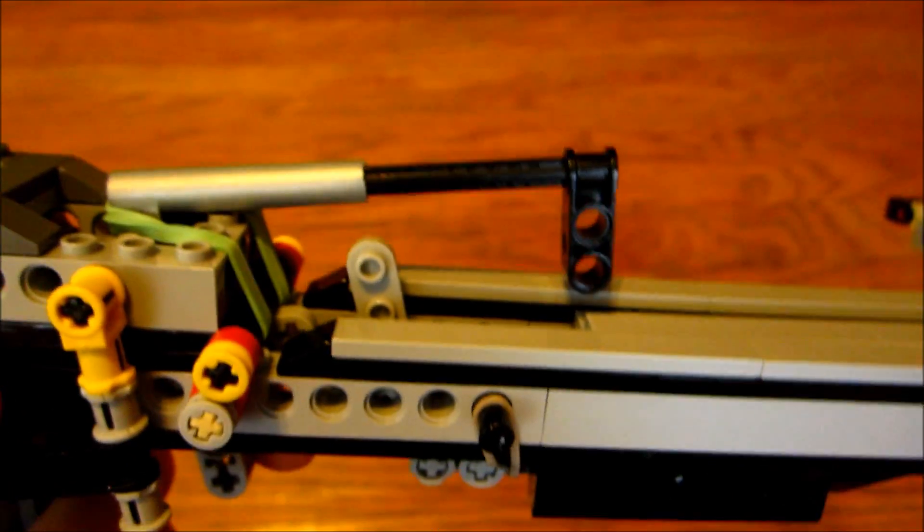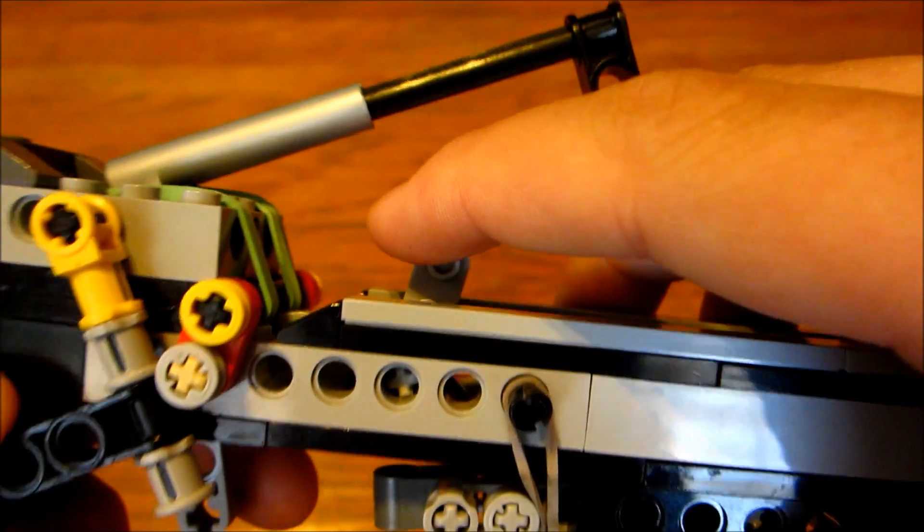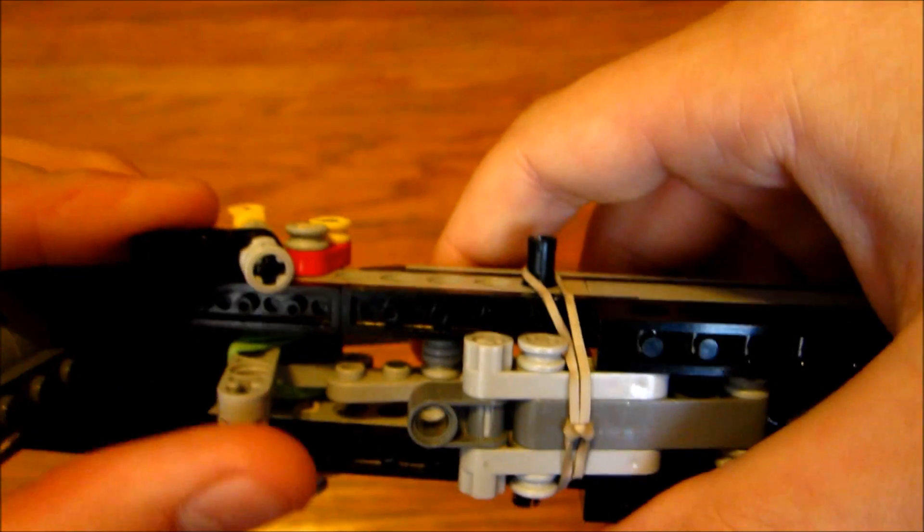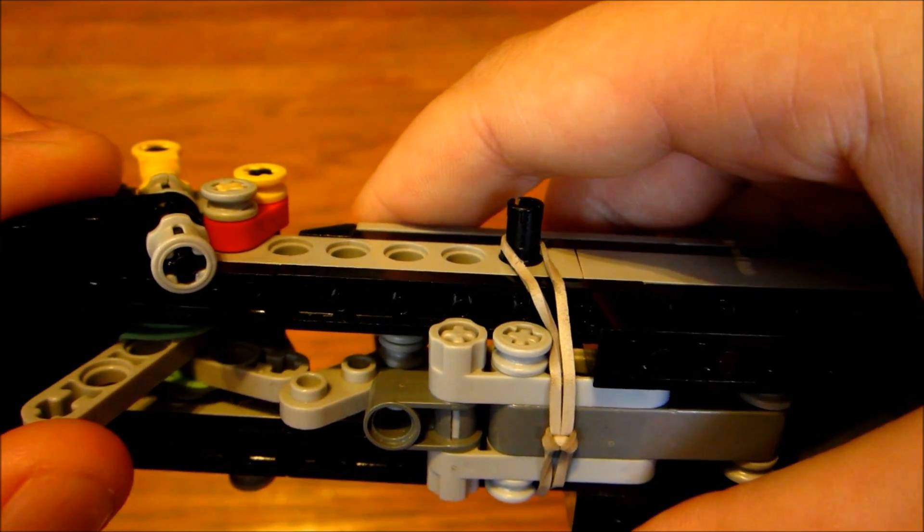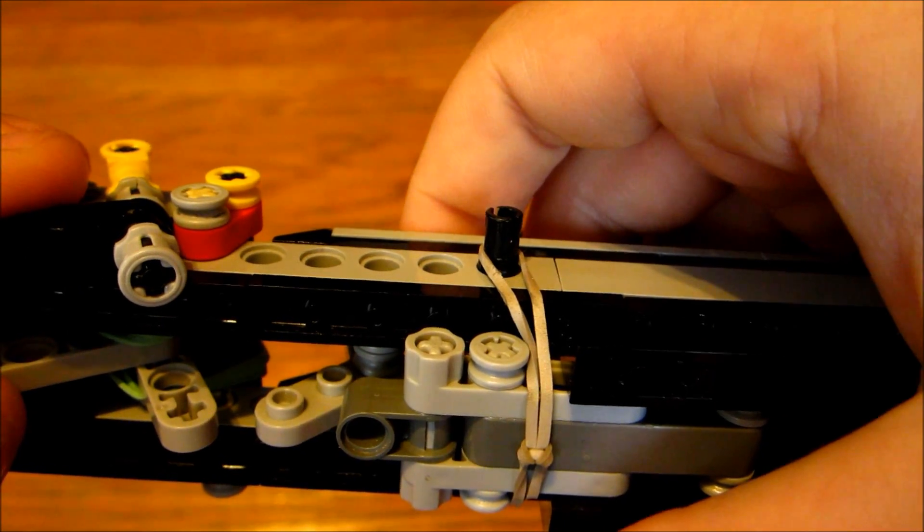So, what you do, is when it cocks, it pushes this forward. So, now it's laying on the trigger, and it won't move unless you pull the trigger. So, when you pull the trigger, it goes like that, and then it releases the rubber band.